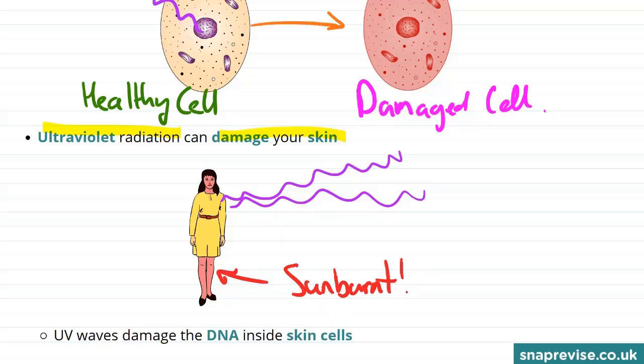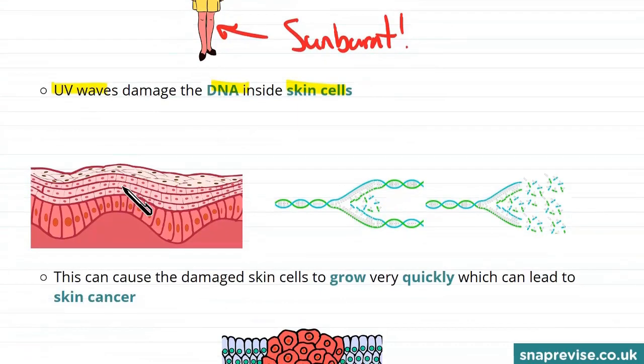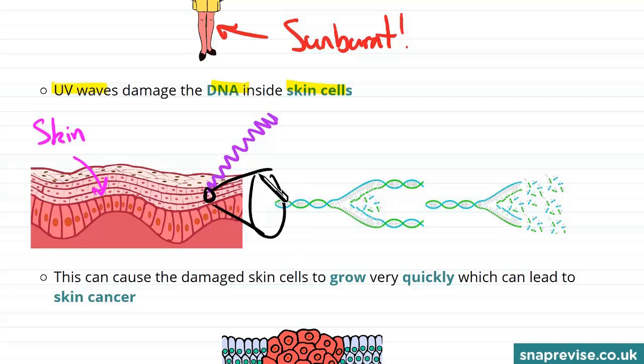But sunburn isn't the only problem with ultraviolet radiation. The ultraviolet waves damage the DNA inside skin cells. So here we're just looking at a cross section of some skin. When one of these high energy ultraviolet waves comes in. And let's see how it damages a skin cell. So let's zoom in on one of these cells. Inside one of these cells we might come across some strands of DNA.